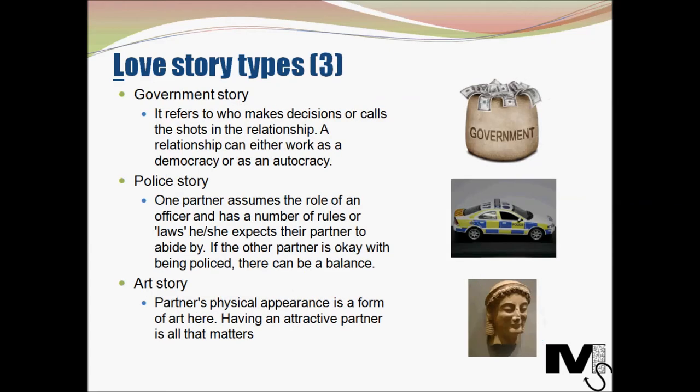The next story type is the government story. This relates to the balance of power between the two people involved — basically, who makes the decisions or calls the shots in the relationship. In the minds of people who follow this story, a relationship can either work as a democracy, where both partners have their say and decision making is distributed equally, or as an autocracy, where one partner has all the decision making power and ensures that decisions are implemented.